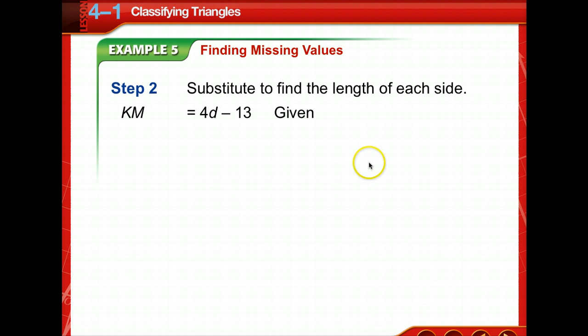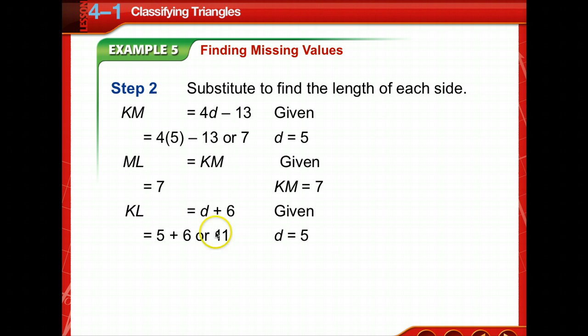Okay. So, KM is equal to 4D minus 13. You're going to substitute a 5 in for D and solve. Because ML is equal to KM, we know that once we find the measurement of ML, we've found the measure of KM. Now, we just do the math for KL. If D is 5, 5 plus 6 is 11. So, the measurement KM is equal to ML, which is equal to 7, and KL is equal to 11.